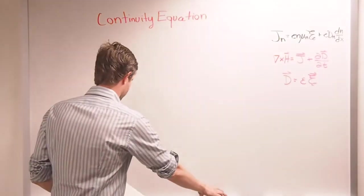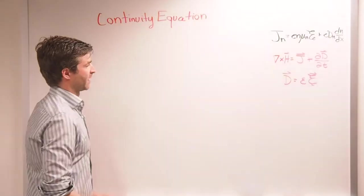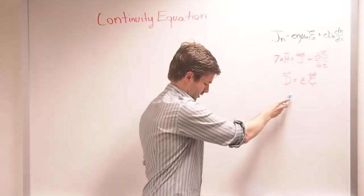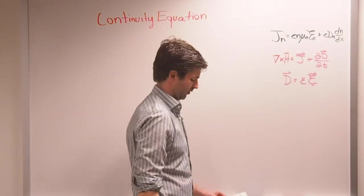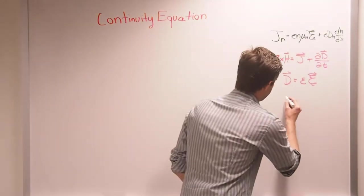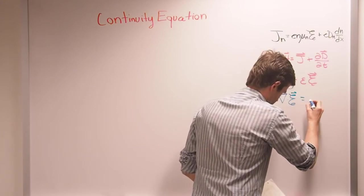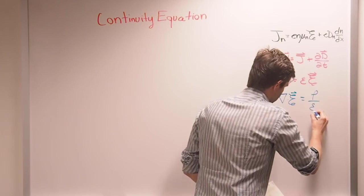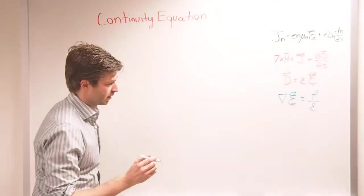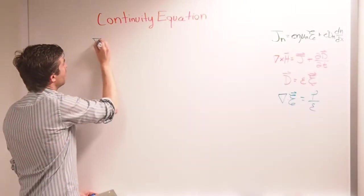To start with the continuity equation, we need to know a few things back from electromagnetics and electromagnetism. That's Ampere's law, and this comes from Gauss's law — actually Gauss's law here in differential form. Del dot E is equal to the charge density over epsilon. From vector calculus, the divergence of a curl is always zero.